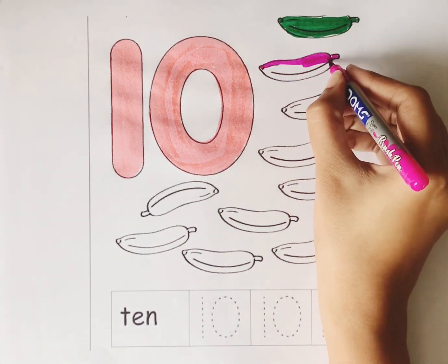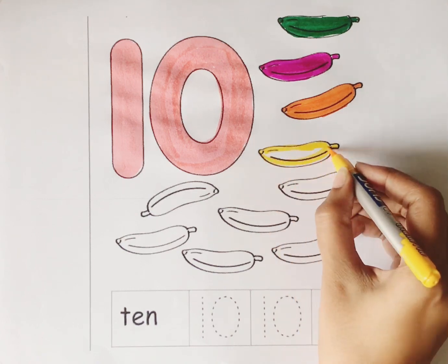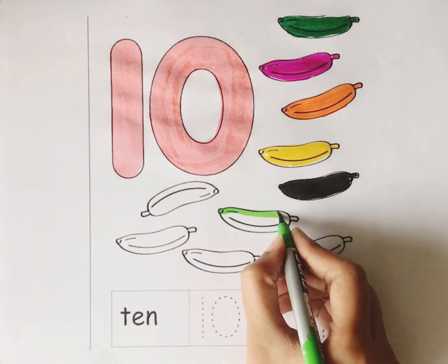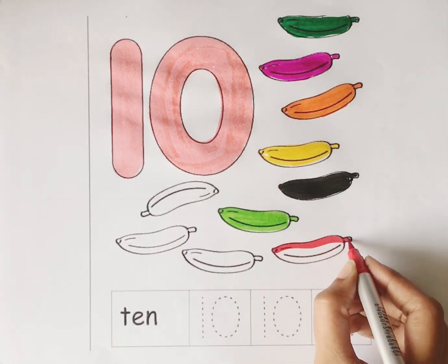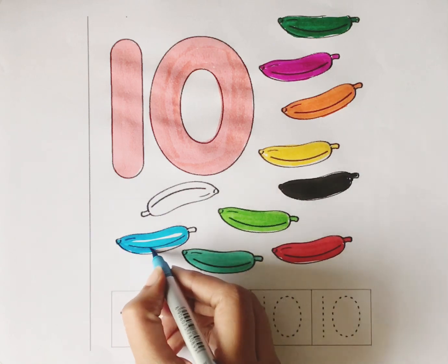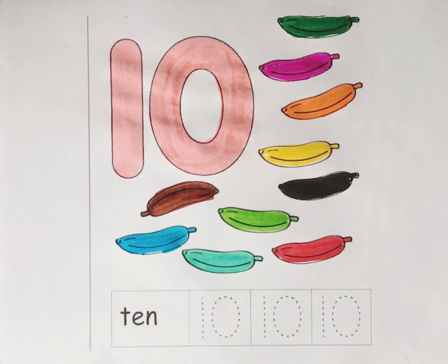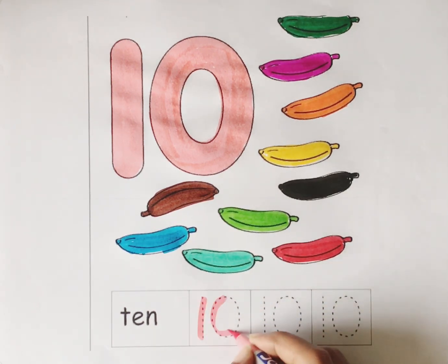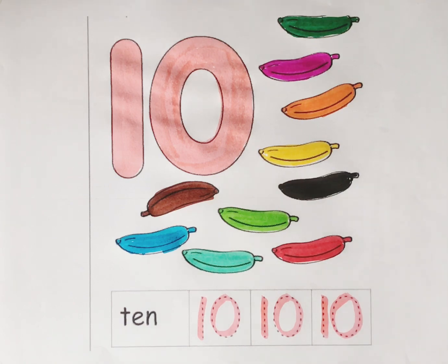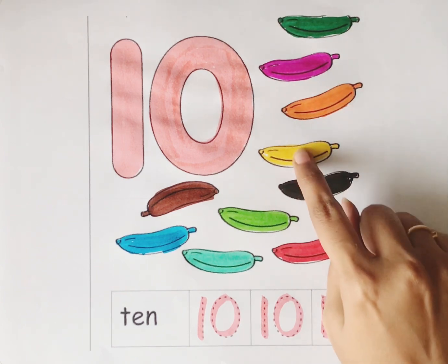Let's count the bananas: 1, 2, 3, 4, 5, 6, 7, 8, 9, 10. Orange color, yellow color, black color, green color, light green, red color, sea green color, sky blue color, brown color. Let's trace the number 10. Number 10. Let's count the bananas: 1, 2, 3, 4, 5.